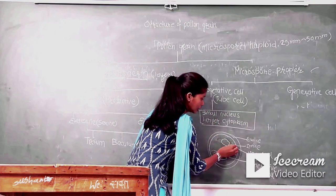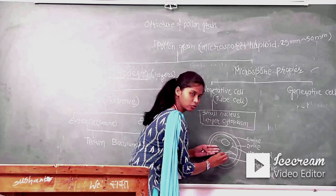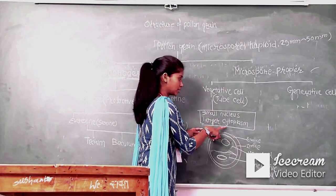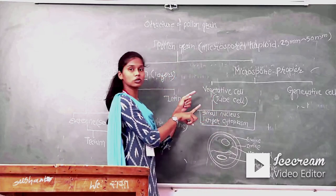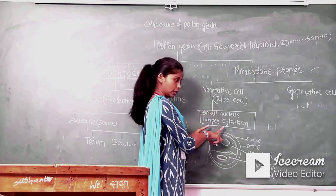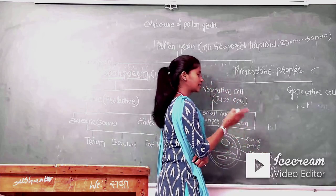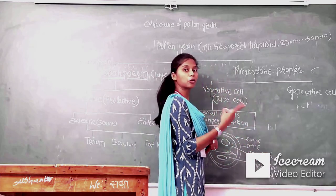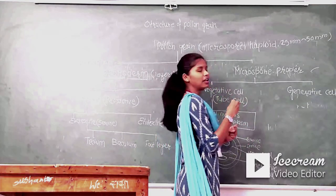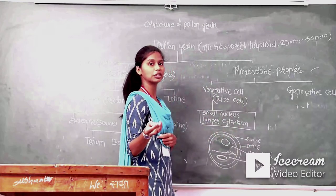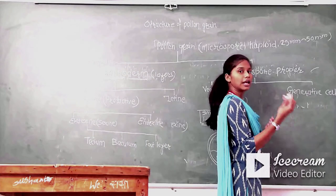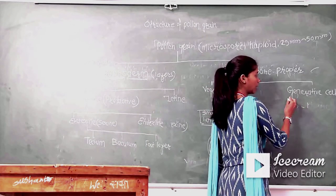The vegetative cell, also known as tube cell, consists of larger cytoplasm and a small nucleus. It is called tube cell because it produces the pollen tube. This vegetative cell will degenerate in further development, while the generative cell will give rise to the next generation. So the generative cell has a larger nucleus and smaller cytoplasm, and these two cells comprise the microspore proper.